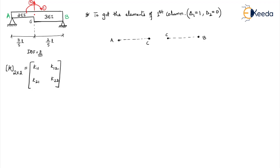Now observe this. The rotation at C is going clockwise — clockwise means this portion moves upward. So this will be lifted up. For this beam it is pushing the beam downwards. So what we are applying is a unit rotation at point C. For the left span AC, this is delta 1 equal to 1 clockwise. For the right span CB, this is also delta 1 equal to 1. For span AC, EI is 2EI and the length is 3/5L. For span CB, the EI value is 3EI and the length is 2/5L.